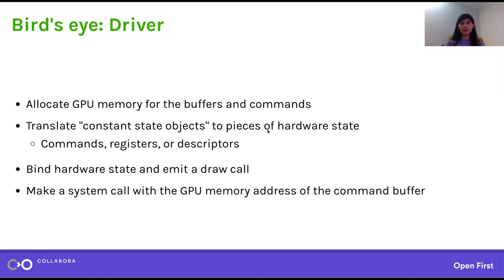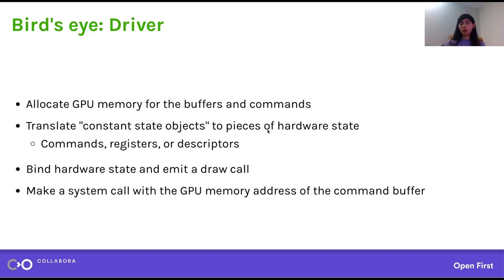It's just allocating memory for the workload, translating the workload, and uploading that to GPU memory. This makes up a significant amount of code even for the simplest GPU — this alone would account for about 10,000 lines of code, and for more complicated hardware that obviously balloons.